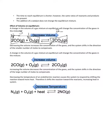What if you increase the volume? If you increase the volume, you're going to head towards the side with the larger number of moles. On the left you have 2 moles of carbon monoxide and 1 mole of oxygen gas, a total of 3 moles. On the right-hand side, you have 2 moles of carbon dioxide. So if you increase the volume, you would shift towards the reactants — the side with more moles.